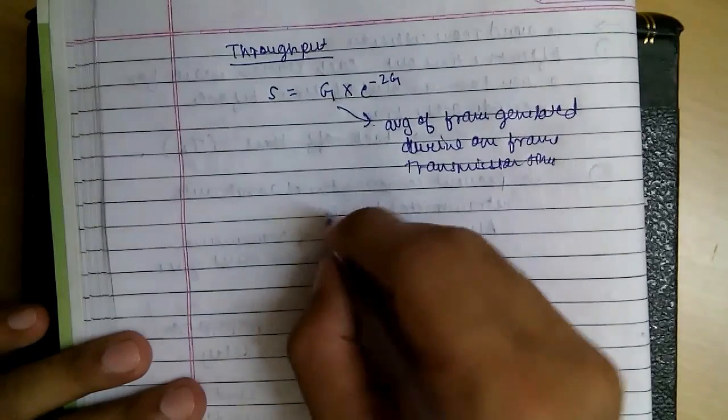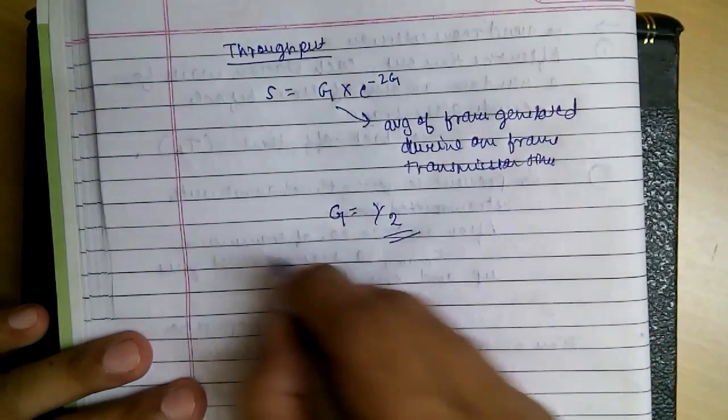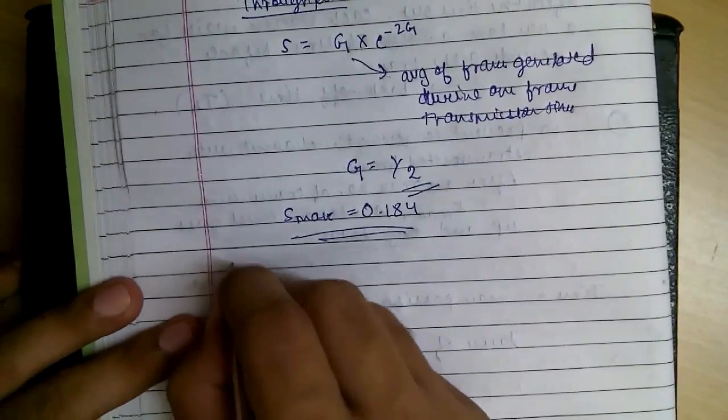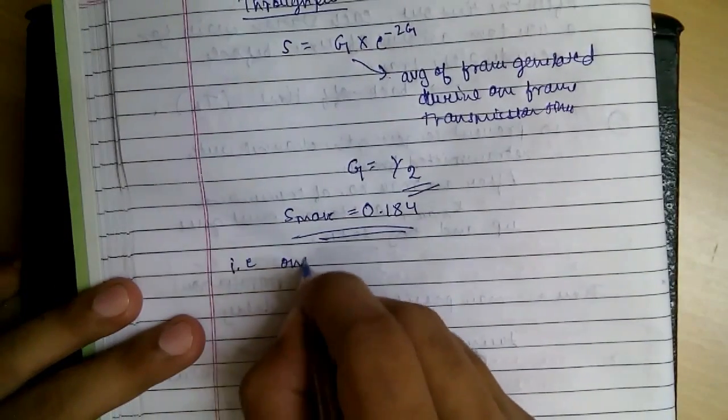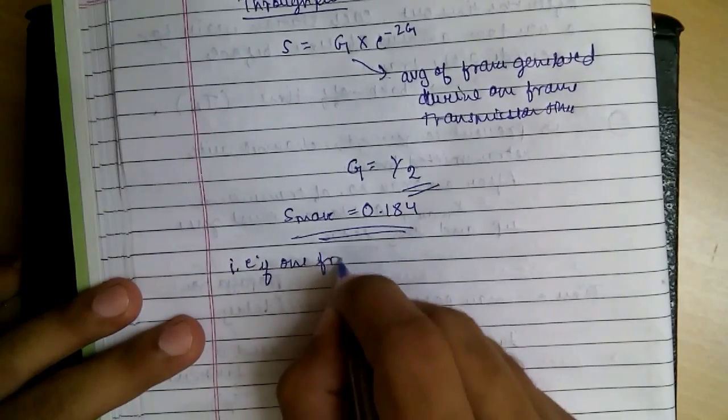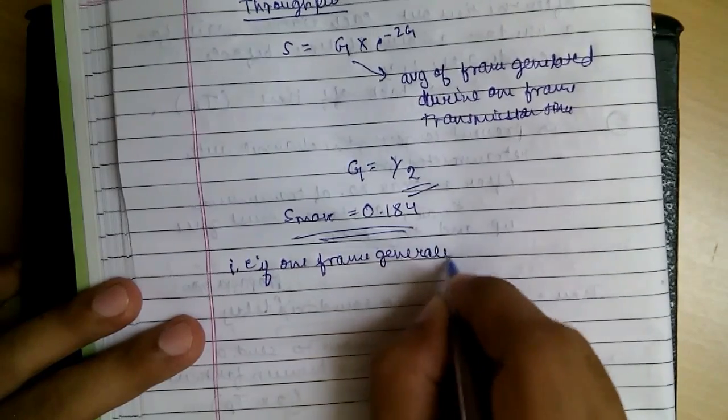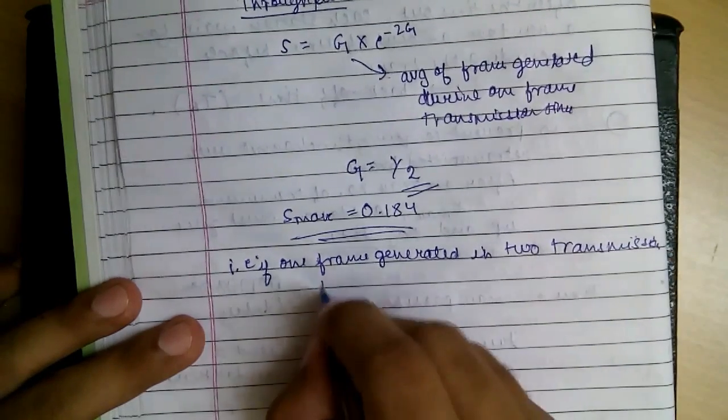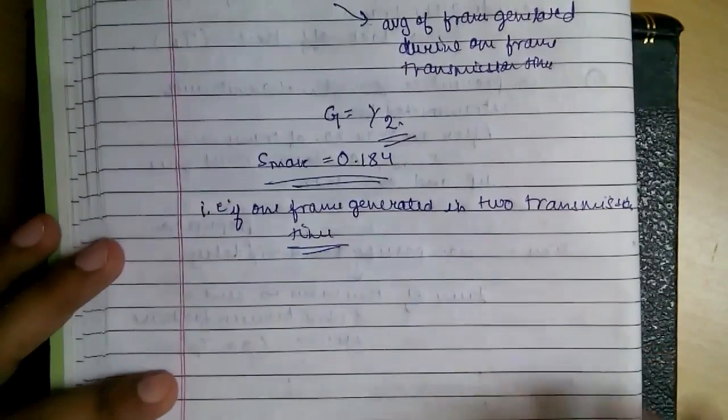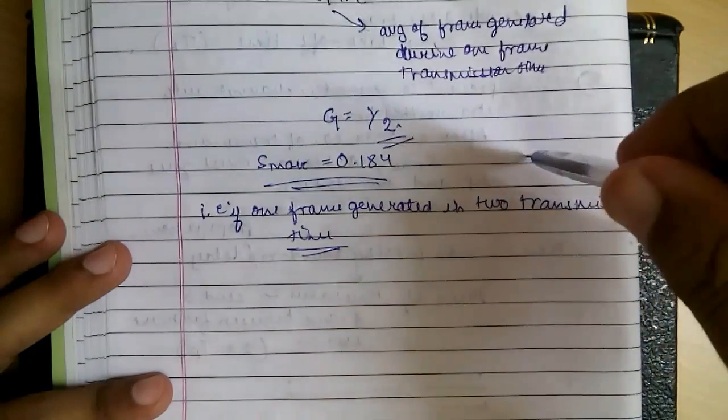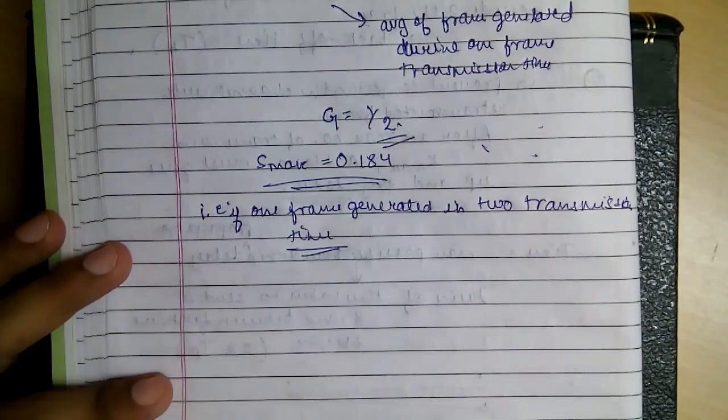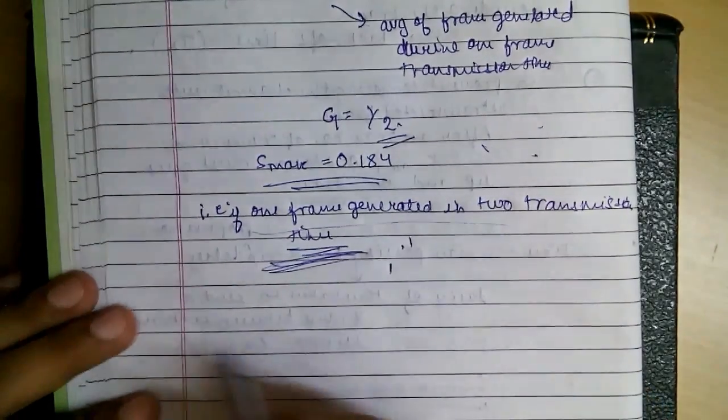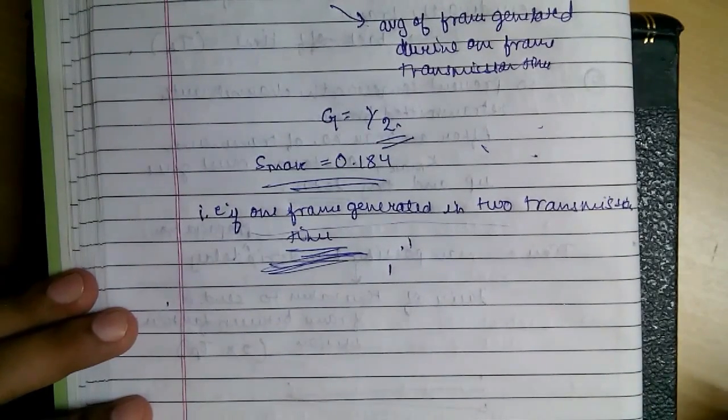Throughput is maximum when G is equal to half, and Smax comes out to be 0.184. What this means is that if one frame is generated in two transmission times then it will be maximum. You can easily relate it with the vulnerable time as it was 2 into the average time of frame. If only one is generated between them, there won't be a chance of collision. That's all in pure Aloha.